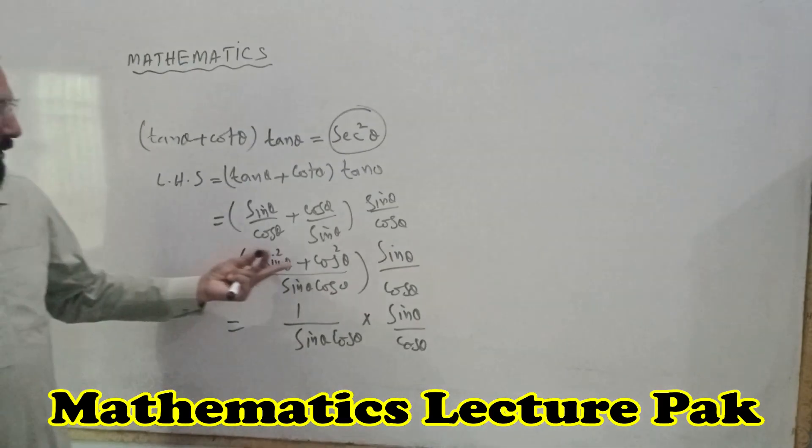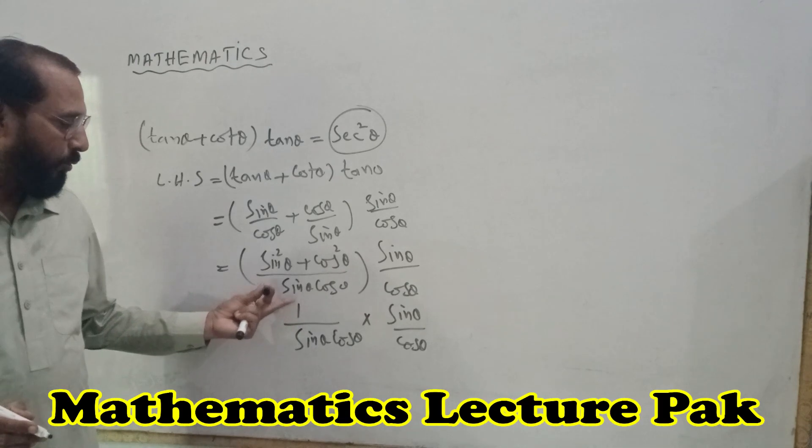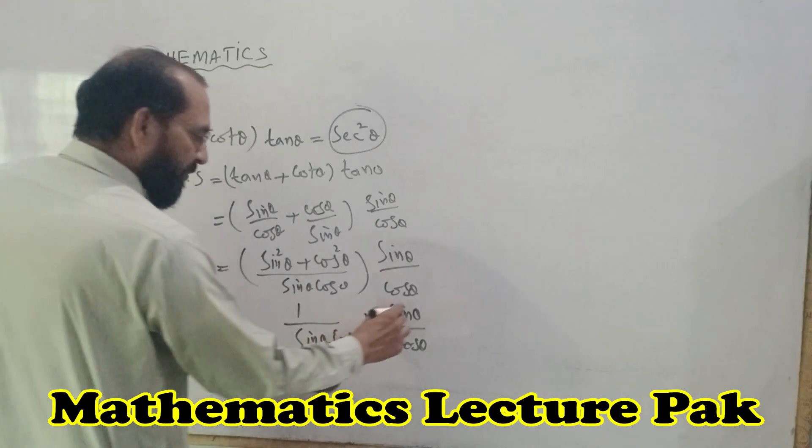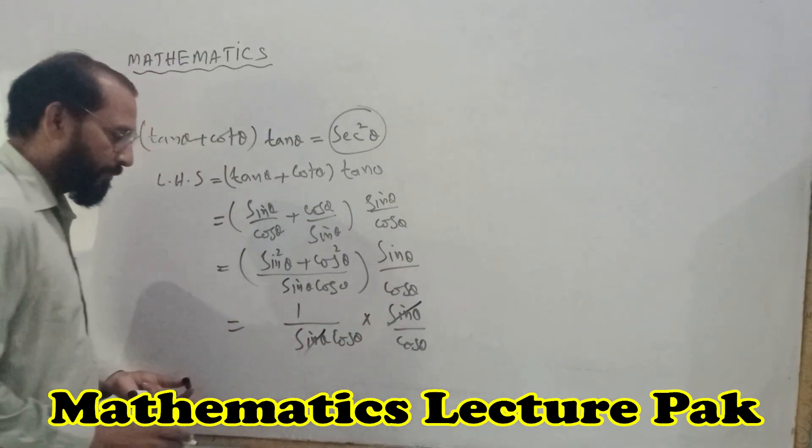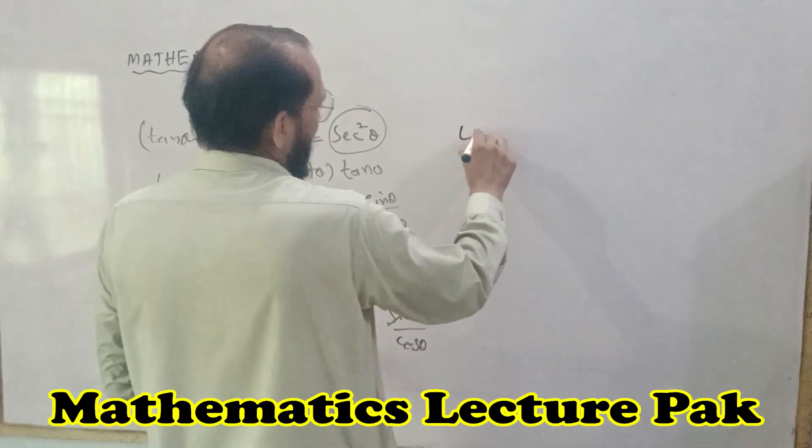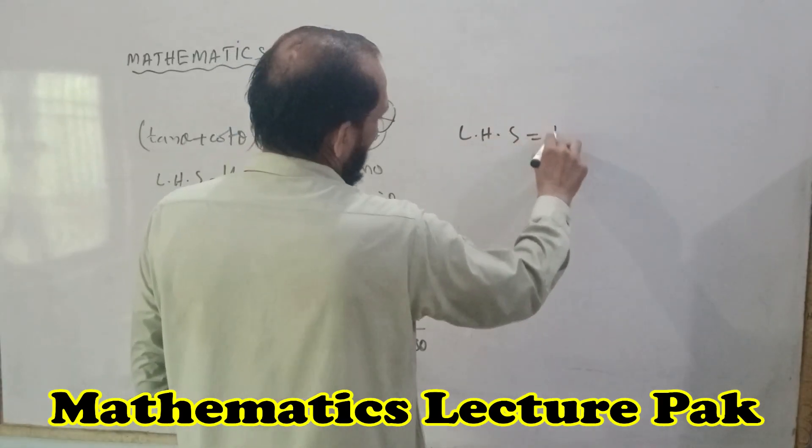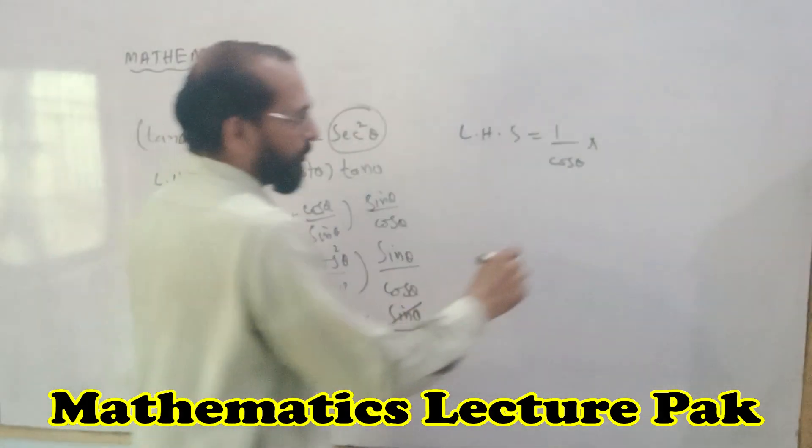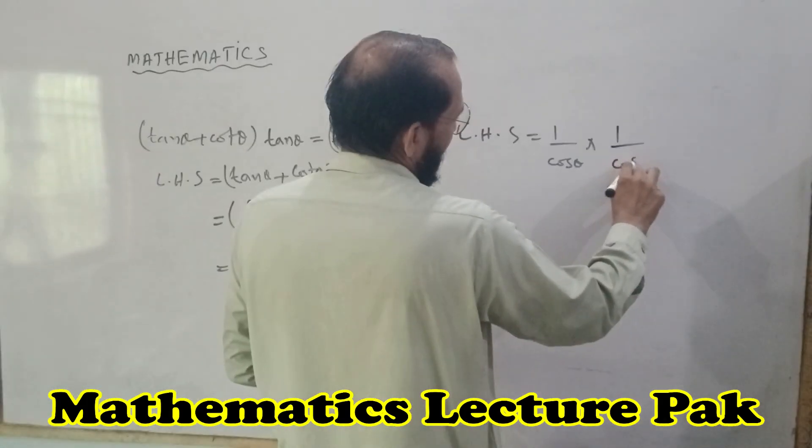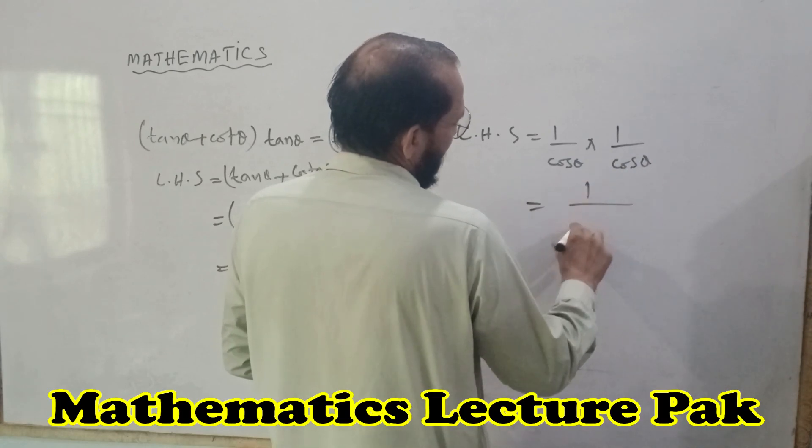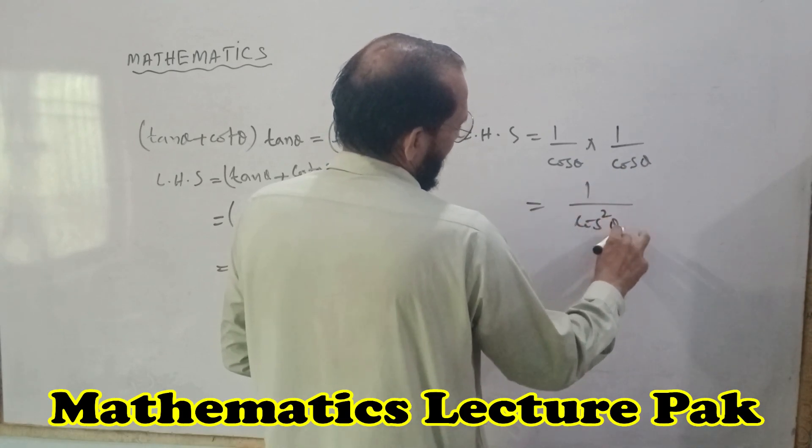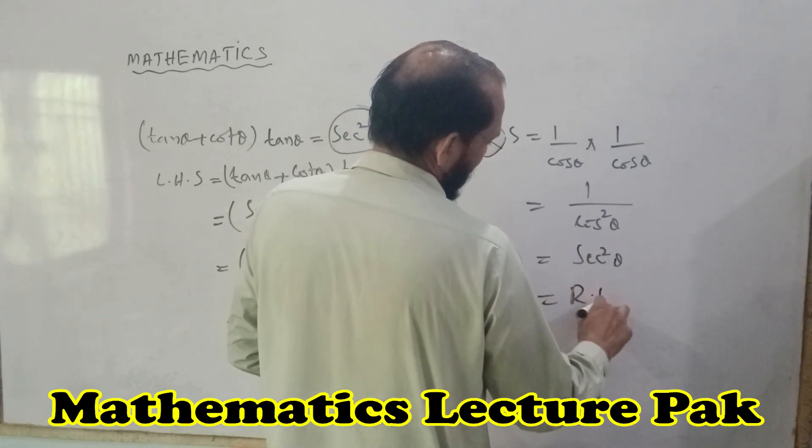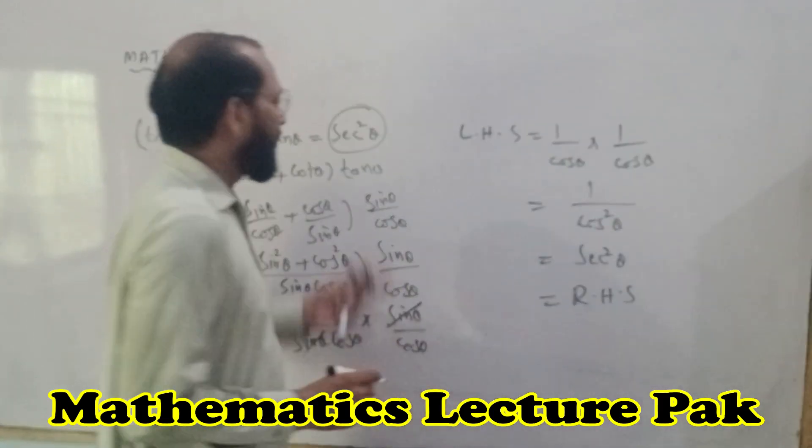So sine squared theta plus cosine squared theta is equal to one over sine theta cosine theta. And we have one in the numerator, this will make us one over cosine squared theta, and we can say that right hand side secant squared theta.